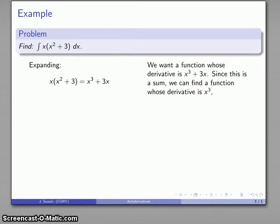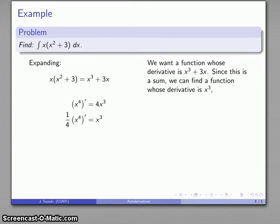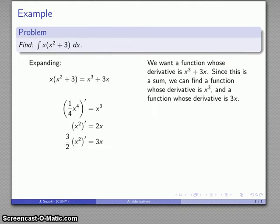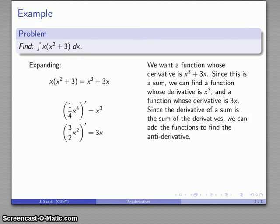So I can find a function whose derivative is x cubed, a function whose derivative is 3x, and add the two together. So there's my function whose derivative is x cubed. And I want a function whose derivative is 3x, so I'll start with x squared. The derivative is close but not quite, and I'll multiply by 3 halves to get what I want and move the constant inside. So the derivative of a sum is the sum of the derivatives.